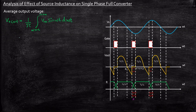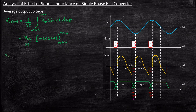Now simplifying this, we can take Vm outside. Vm by pi, integration of sine is nothing but minus cos, so minus cos(omega t), with limits alpha plus mu to pi plus alpha. Now applying the lower and upper limits, Vout average is equal to Vm by pi...